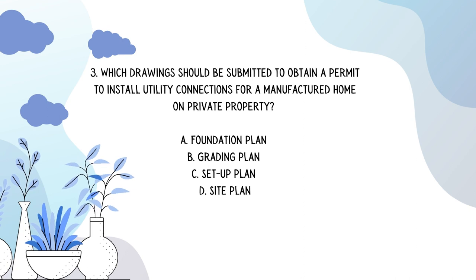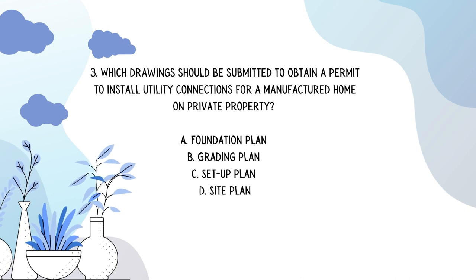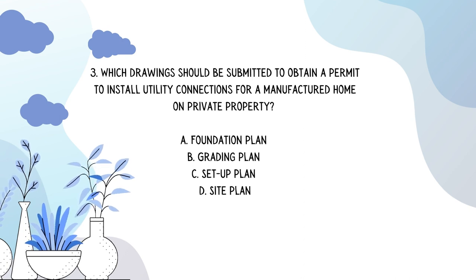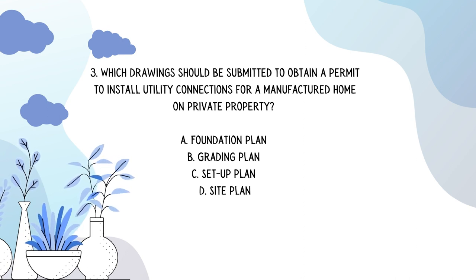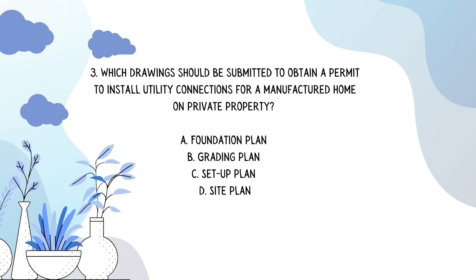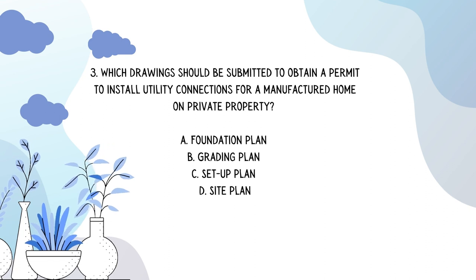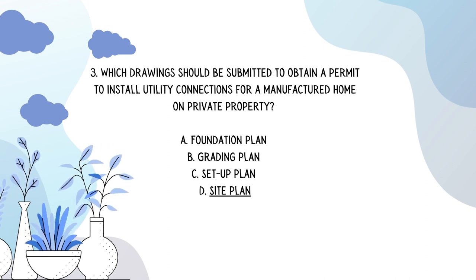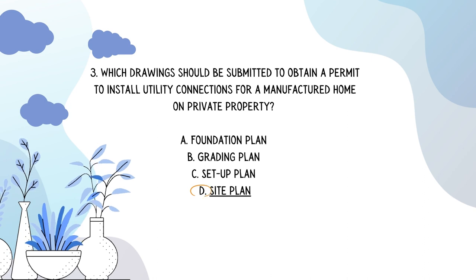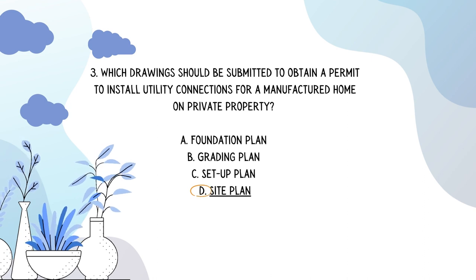Which drawing should be submitted to obtain a permit to install utility connections for a manufactured home on private property? That would be D: a site plan.